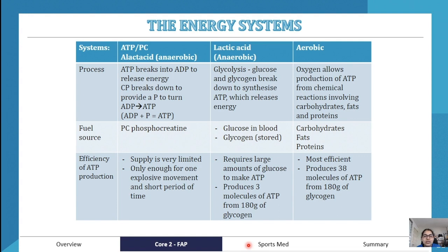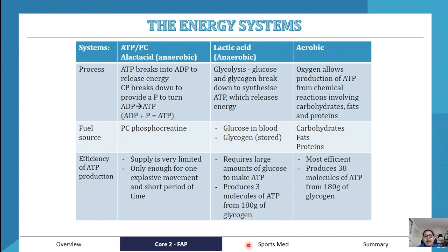The aerobic system uses oxygen to produce ATP from chemical reactions involving carbohydrates, fats, and proteins — these are the fuel sources. It is the most efficient system, producing 38 molecules of ATP from 180g of glycogen, compared to only 3 molecules from the lactic acid system.